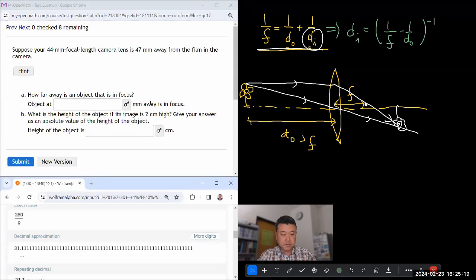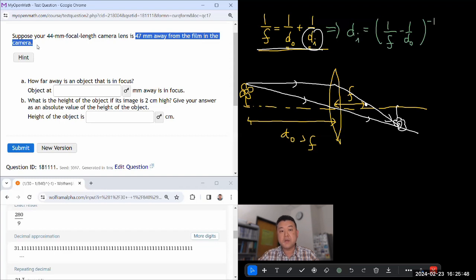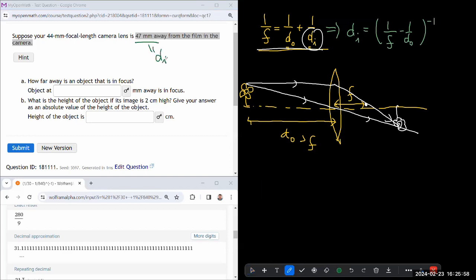Let me look at the next two. Okay, so this is the next question. Suppose your 44 millimeter focal length camera lens. Oh wait, I misread it. So this is the focal length. When it says it's 47 millimeters away from the film in the camera, what they're telling you is the image distance.